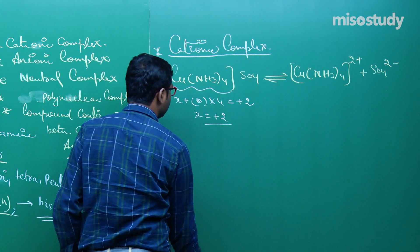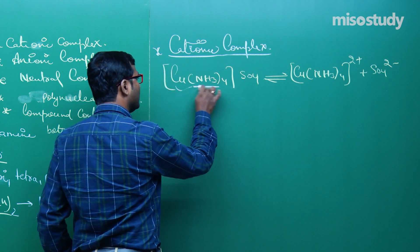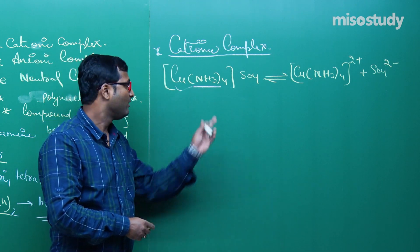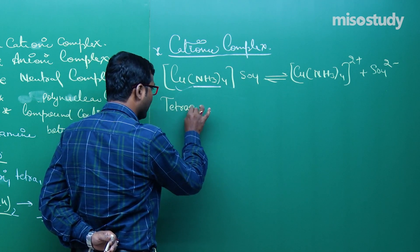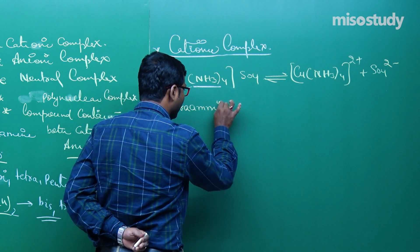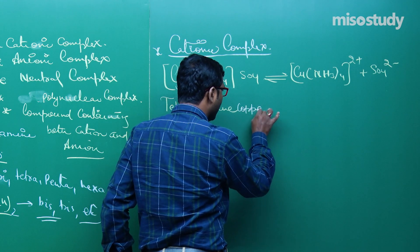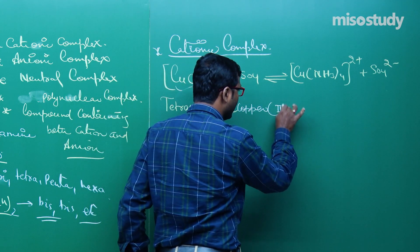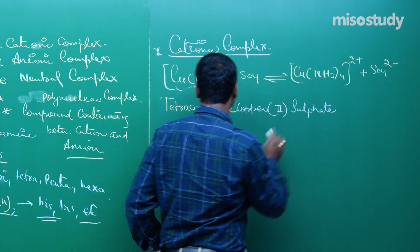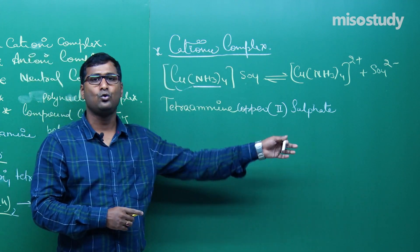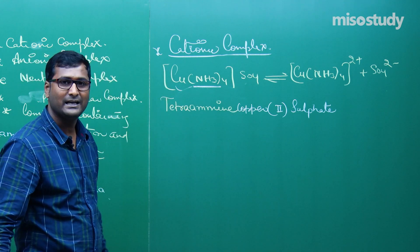How to write the name? Find out the oxidation state of copper: x + 0×4 = +2, so x = +2. Copper is in +2 oxidation state. Write the name of the ligand — amine 4 times, that is tetraamine. Then write the metal: tetraamine copper(II). What is SO4? That is sulfate. So the name is tetraamine copper(II) sulfate. No gap between them.